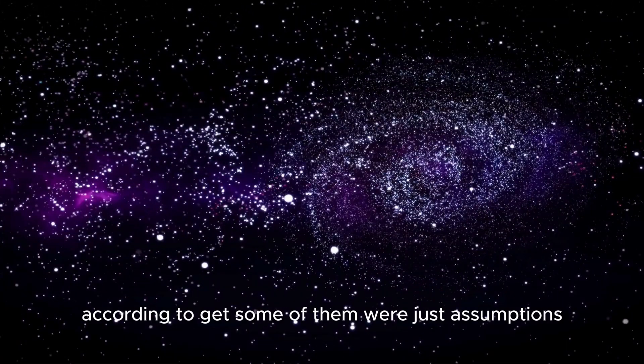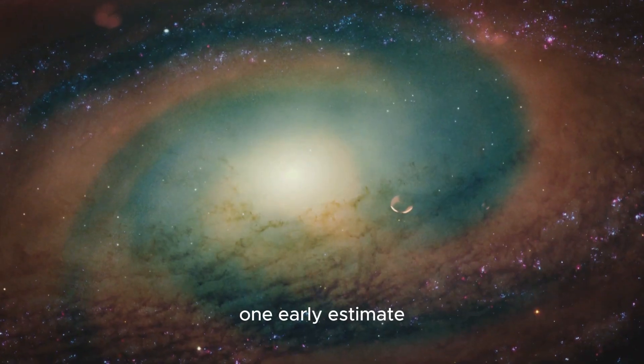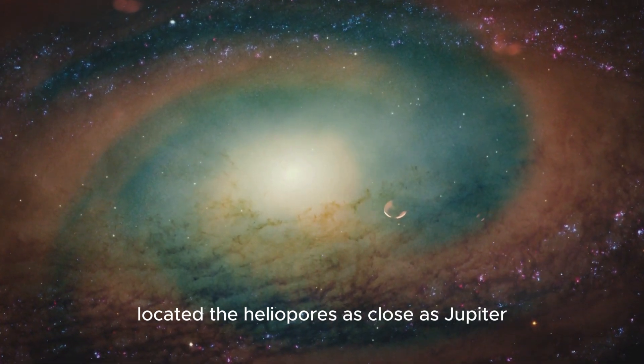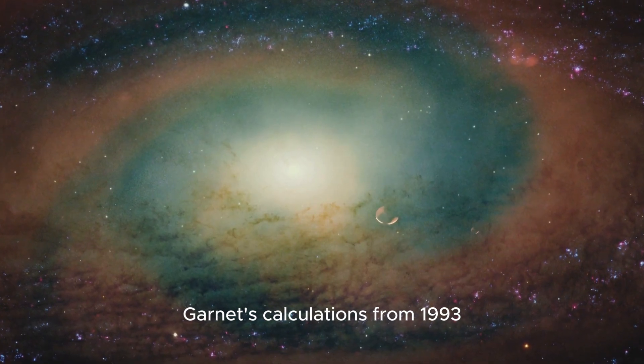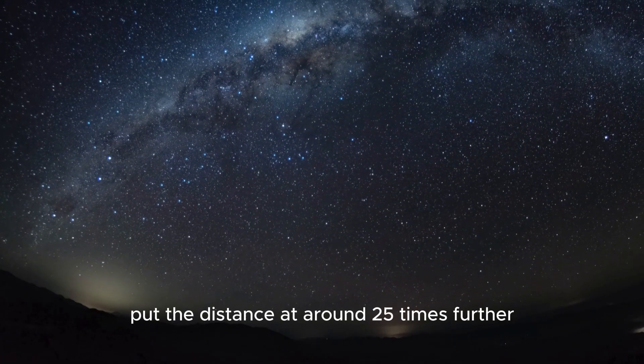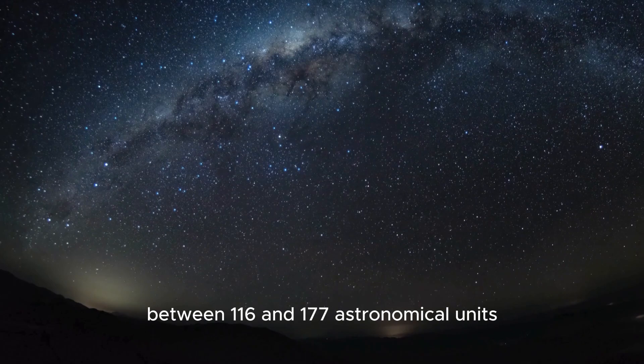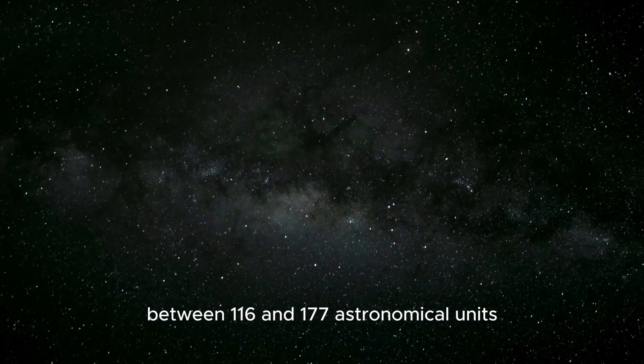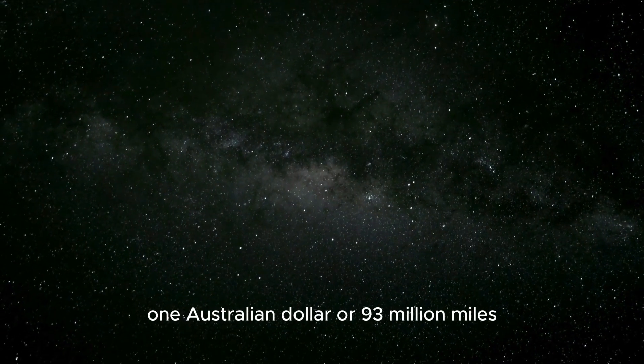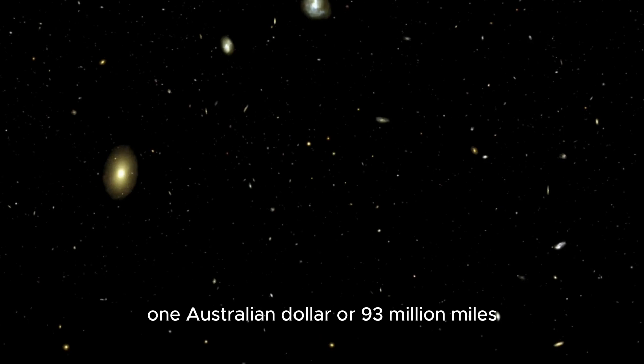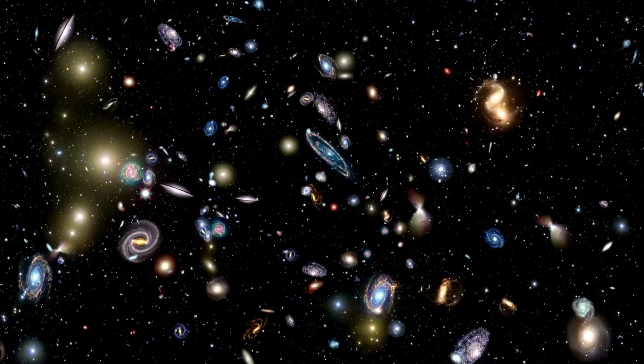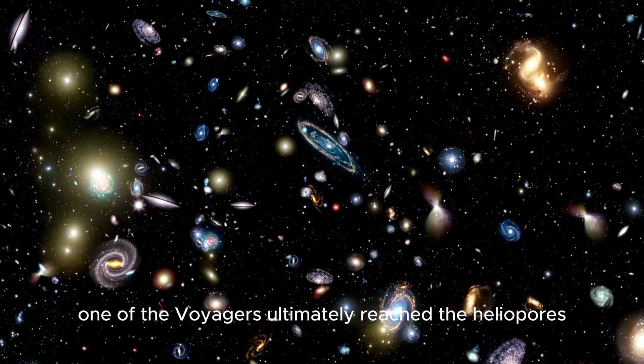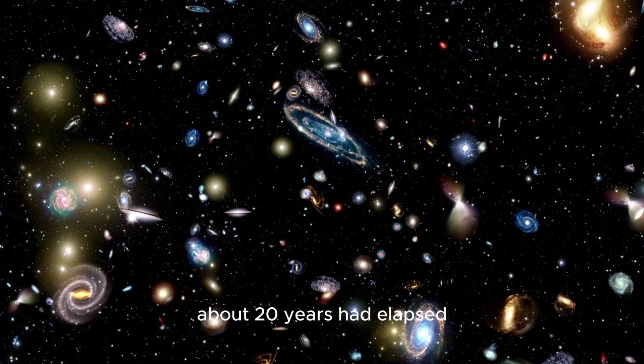According to Gett, some of them were just assumptions. One early guesstimate located the heliopause as close as Jupiter. Garnett's calculations from 1993 put the distance at around 25 times further, between 116 and 177 astronomical units. One astronomical unit, or 93 million miles, is the distance between the Earth and the Sun. Garnett's projections from 1993 were accurate. Before one of the Voyagers ultimately reached the heliopause, about 20 years had elapsed.